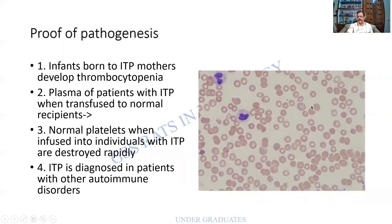Looking at the peripheral blood picture, platelets are markedly reduced — almost absent. In this microscopic image, hardly a single platelet is visible. Platelet counts can be moderately or severely reduced. When the count falls below 20,000, the patient can go into spontaneous bleeding.